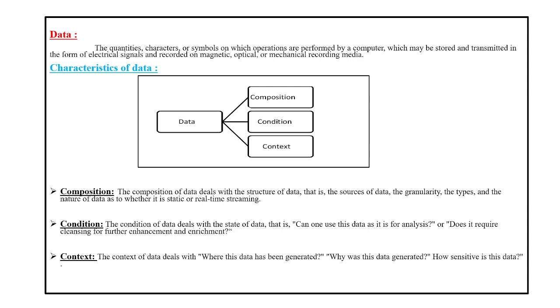Let me start with the last point called context. To know about the context of the data, first we have to focus on where this data is taken from. That means where this data has been generated - the source from which you have taken the data. Second, for what purpose you have generated this data from that specific source. And third, you have to focus on how sensitive that data is. Once you get the answers for these three questions, then the context of the data is clear for us.